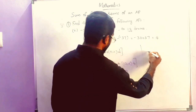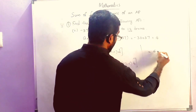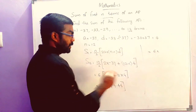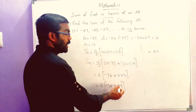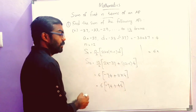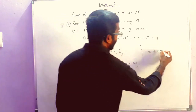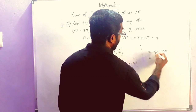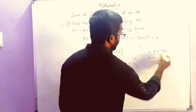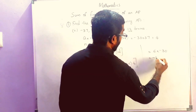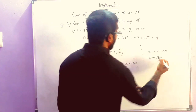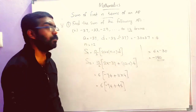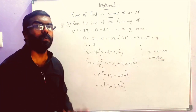We have 6 into minus 74 plus 44. We subtract 44 from 74 to get 30, and the sign is minus, so minus 30. Then 6 into minus 30, which is equal to minus 180. So the sum of the first 12 terms of the AP is minus 180.